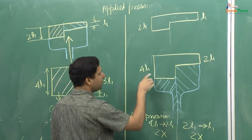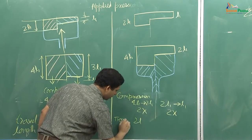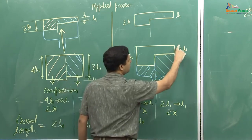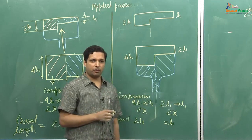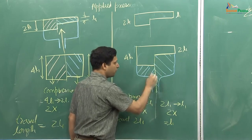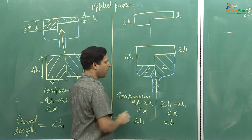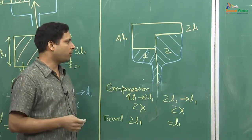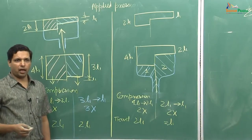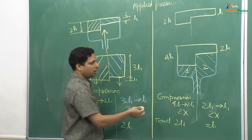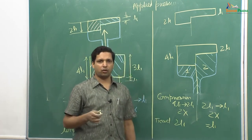What is different is the total travel. The part of the piston for the tall region travels 4L1 minus 2L1, which equals 2L1. But the part for the short region travels from 2L1 to L1, which equals only L1. So the two parts of the piston will have to travel different lengths. This is the kind of technology and innovation you have to apply depending on the component you are trying to create.